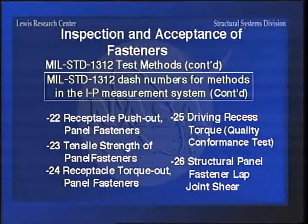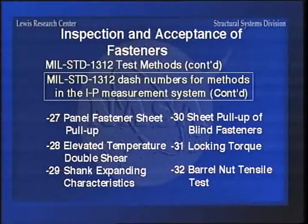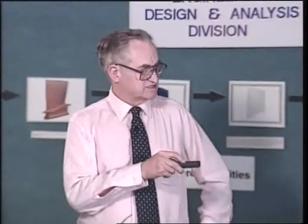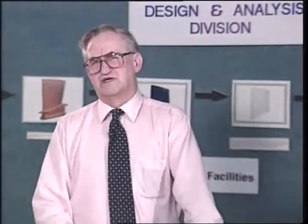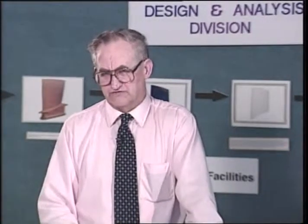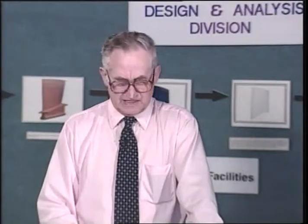Then you have driving recessed torque for a quality conformance test, structural panel lap shear, and sheet pull up. Sheet pull up is important and some of the cherry rivet type - pull stem type rivet manufacturers - have had trouble meeting this. If you have several sheets together, maybe they're not exactly flat, and you try to pull them up and clench the rivet, sometimes you have trouble passing this test. So a lot of the manufacturers have had to go back and revise things to get a little more pull in the system so they can lock the rivets.